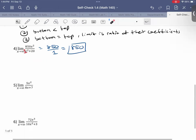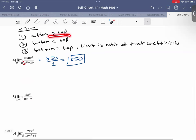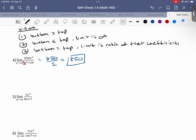So the next one is limit as x goes to infinity of 5x squared over 8x plus 7. So this one, the power on the top, which is 5x squared, is greater than the power on the bottom, which is just 8x. So when the power on the top is greater than the power on the bottom, that means the limit is infinity. So really, this limit is just infinity.